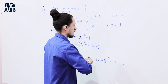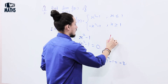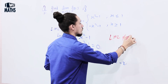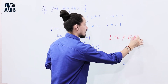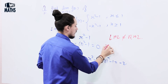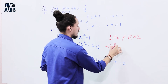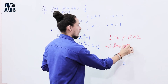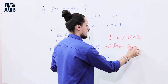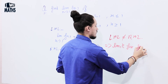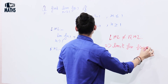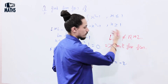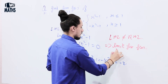So the left hand limit is 0 and the right hand limit is -2. Left hand limit is not equal to right hand limit, which implies the limit for f(x) does not exist.